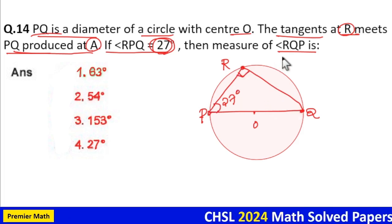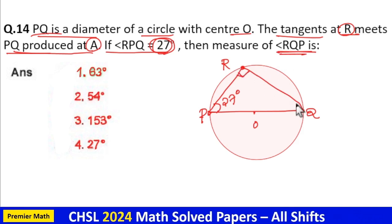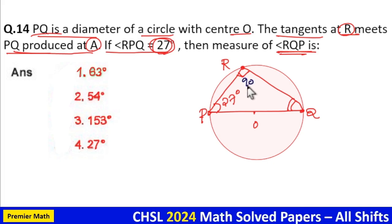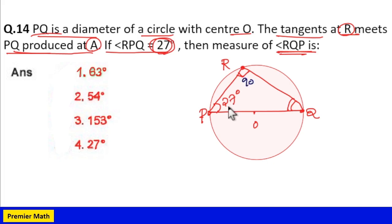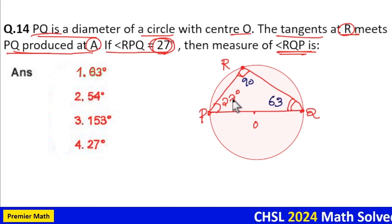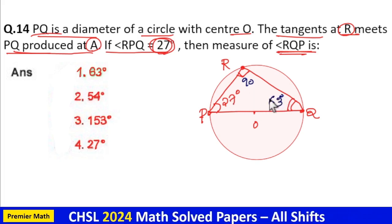If angle PRQ is 90 degrees, we need to find angle RQP, that is this angle. This is 90. 90 plus 27 equals 117, so the remaining will be 63 degrees. So option 1 is your answer.